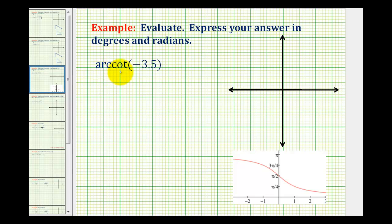We want to evaluate arc cotangent of negative 3.5 both in degrees and radians. Arc cotangent negative 3.5 is equal to some angle theta that has a cotangent function value of negative 3.5. So cotangent theta must equal negative 3.5.